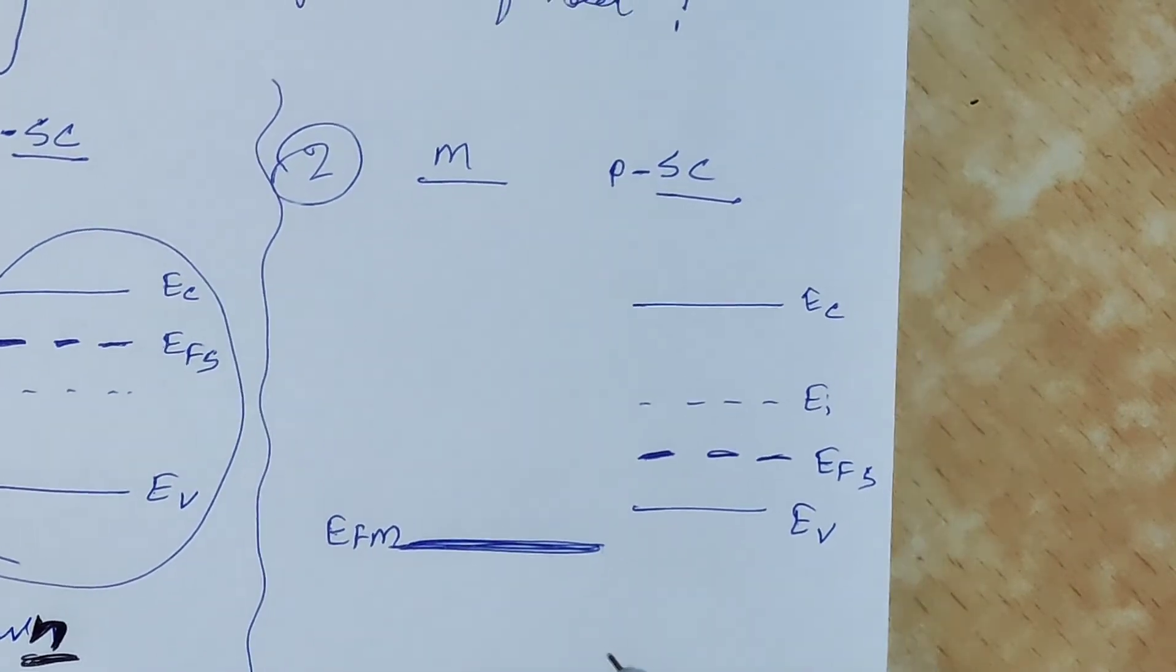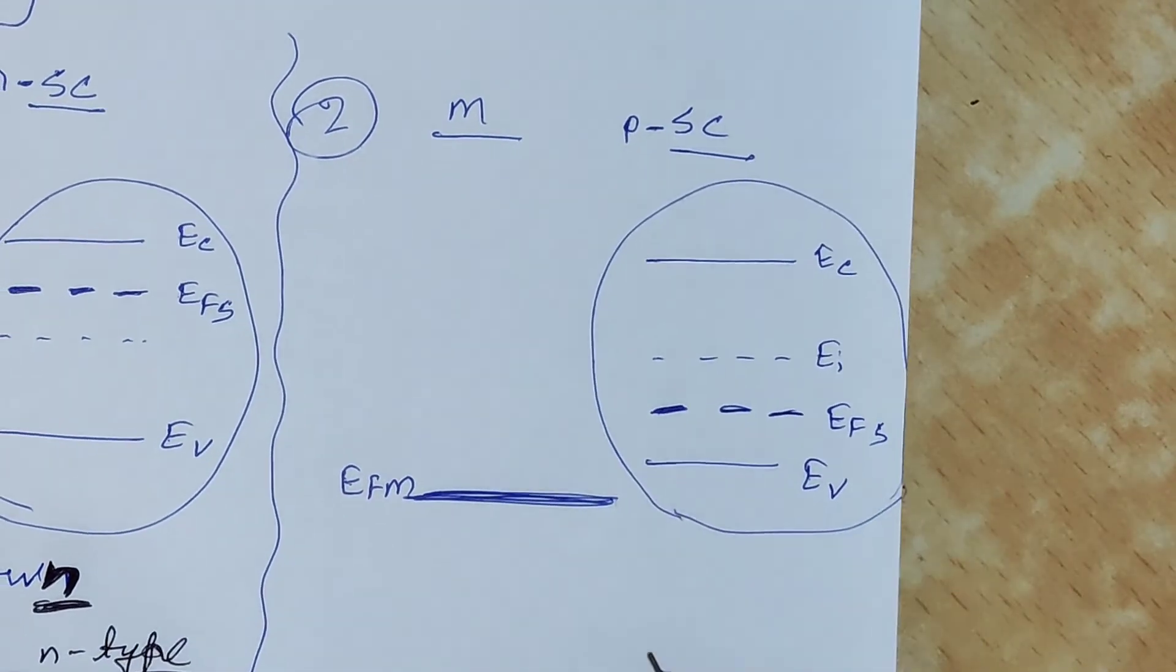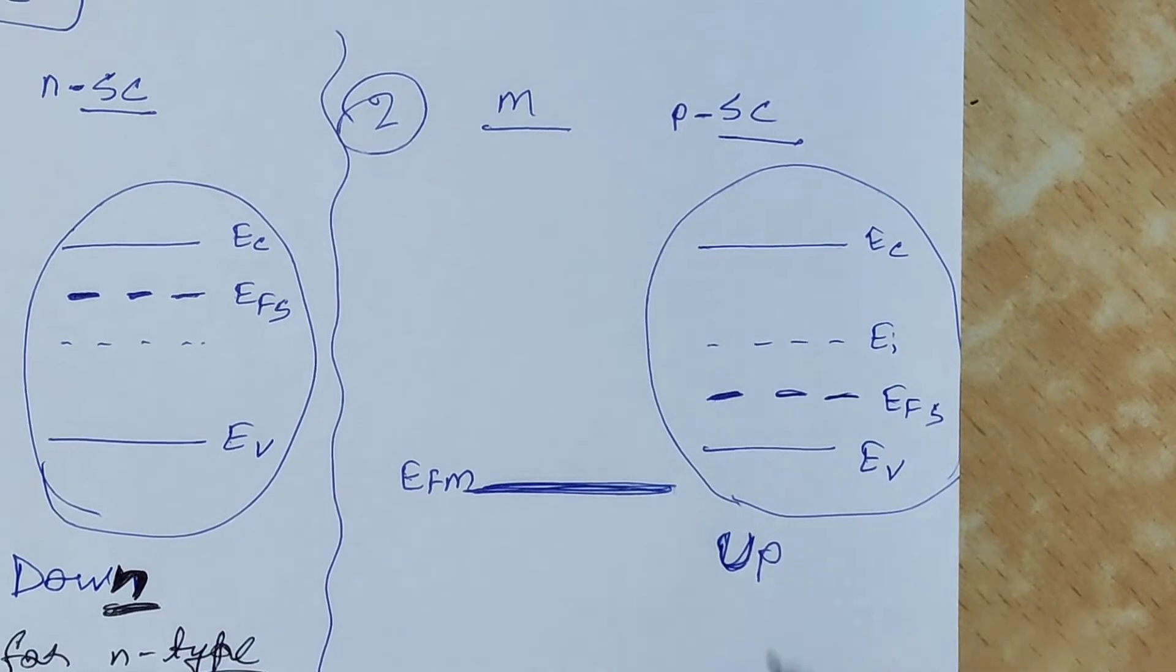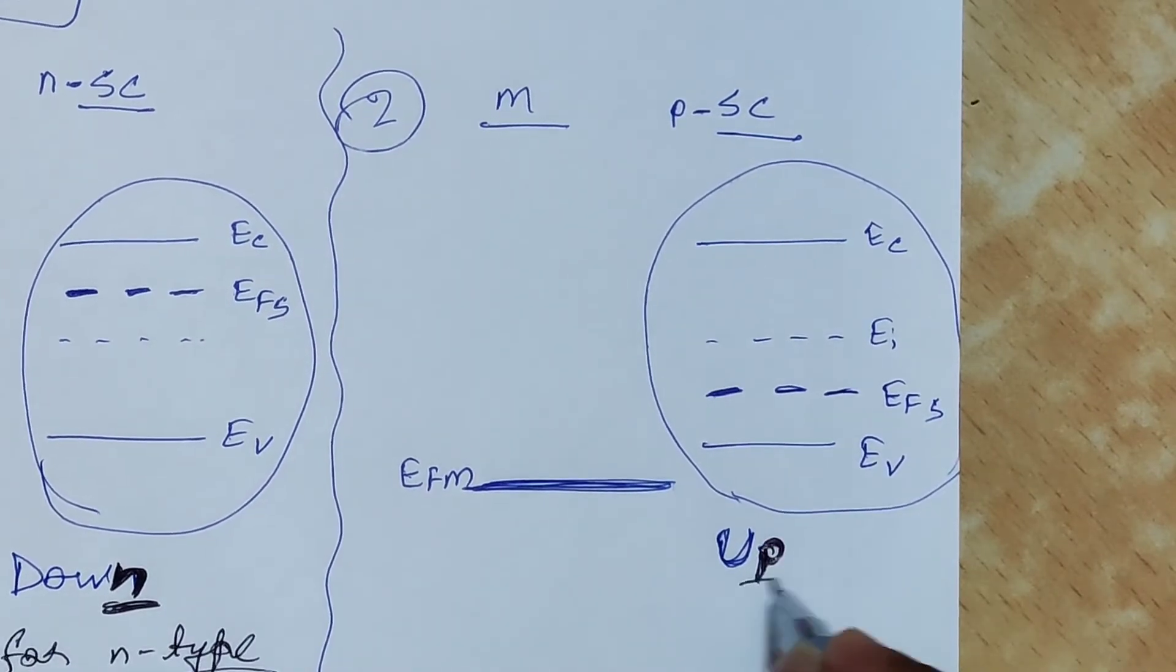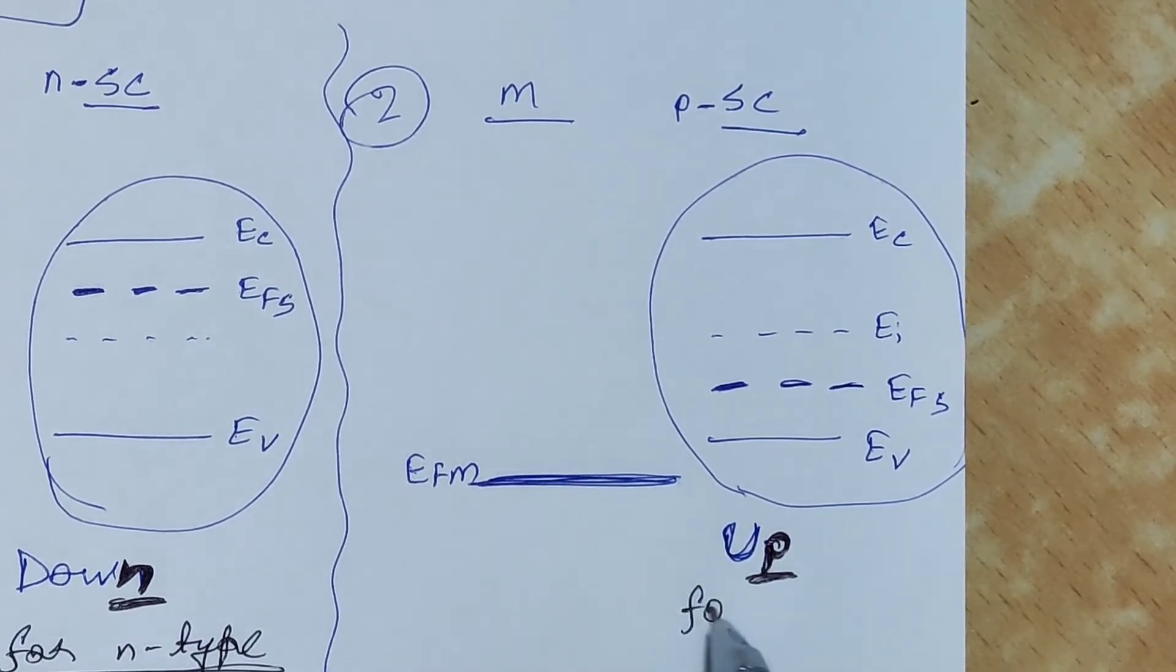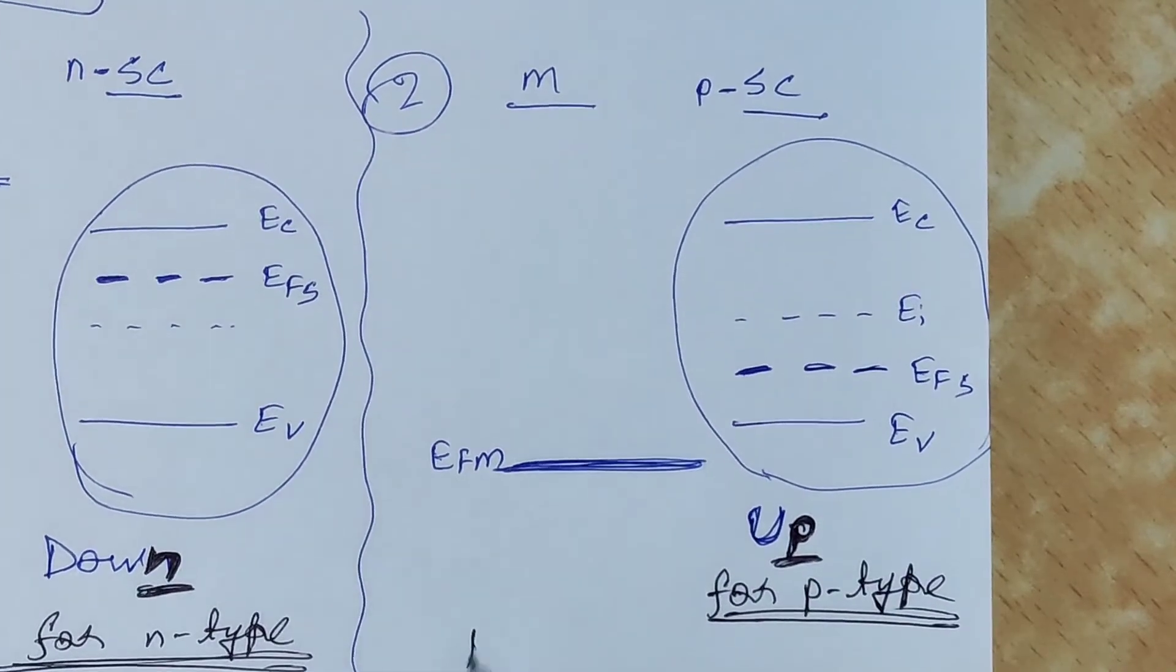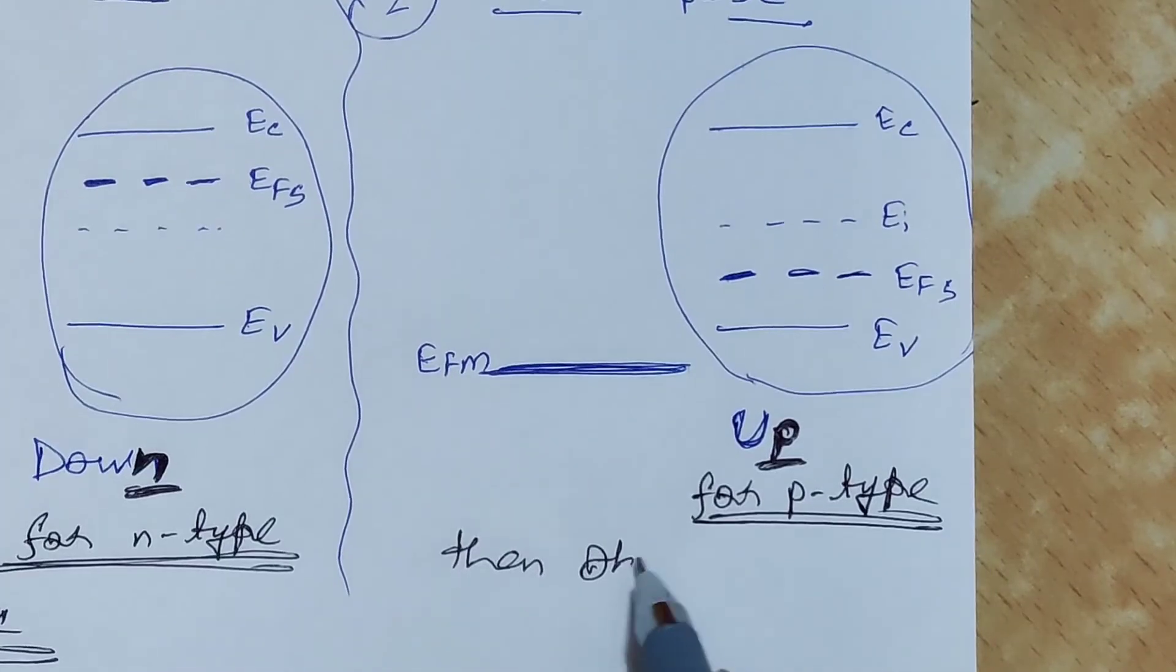And here we have EFM. So as you might have guessed by now, you have to observe that if the whole energy band diagram of p-type semiconductor is up, p for p-type semiconductor, it is up with respect to the Fermi energy level of metal EFM, then it is ohmic contact.